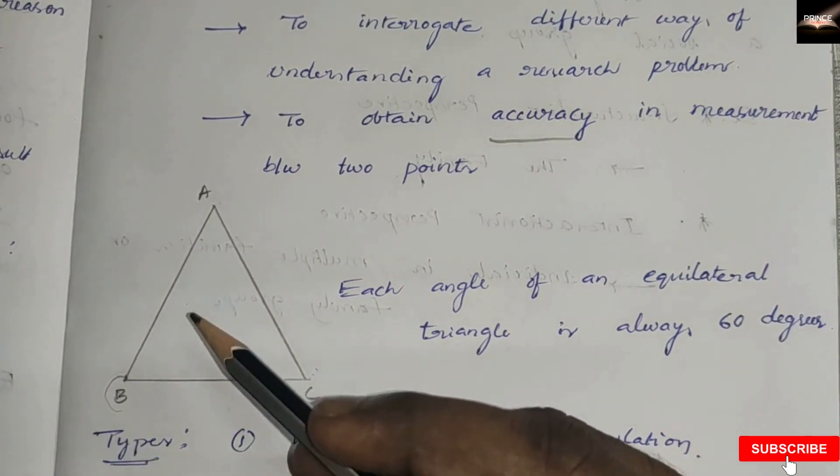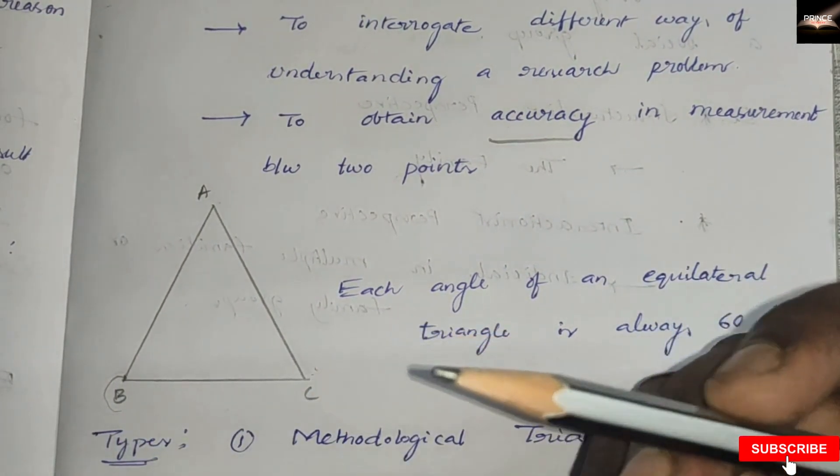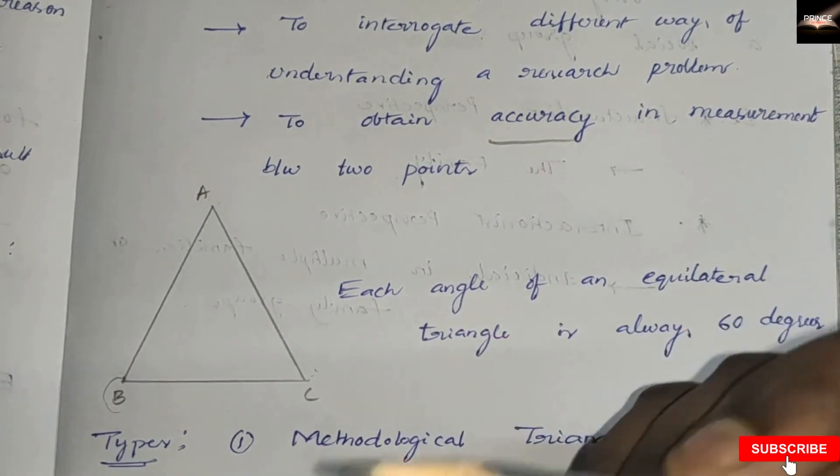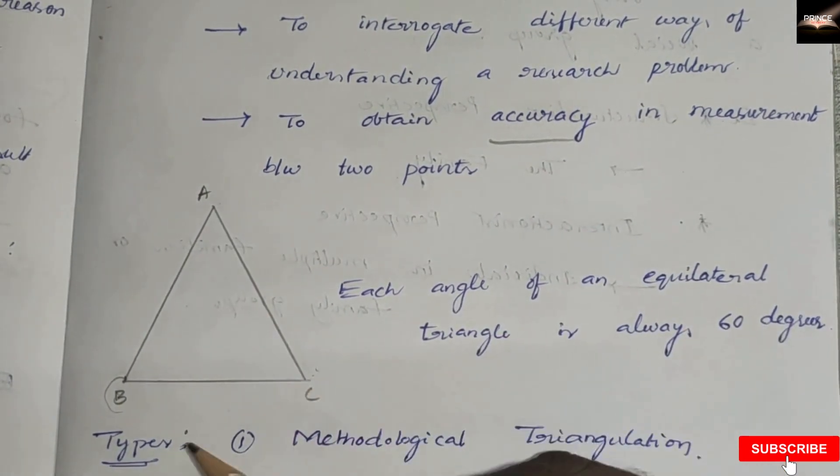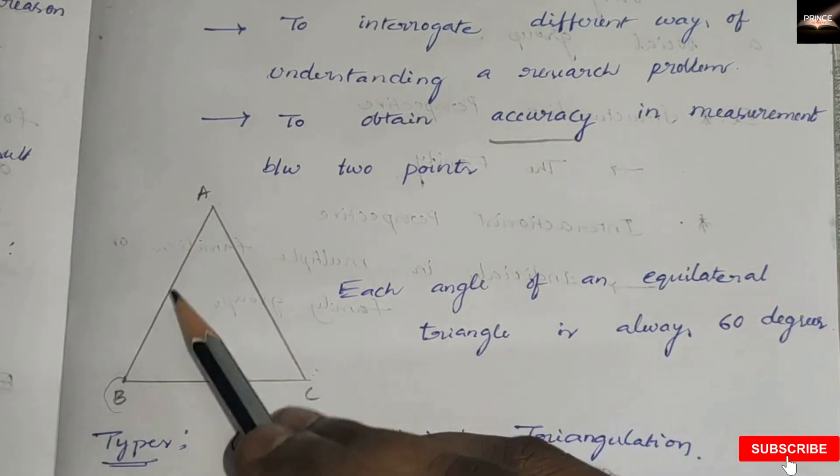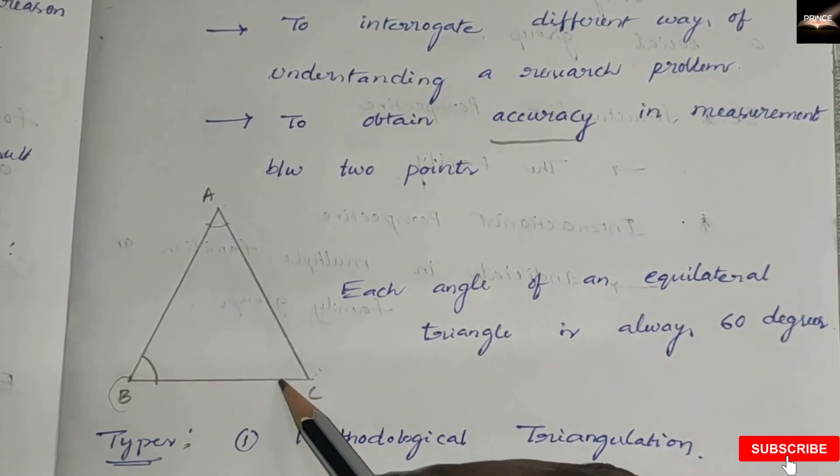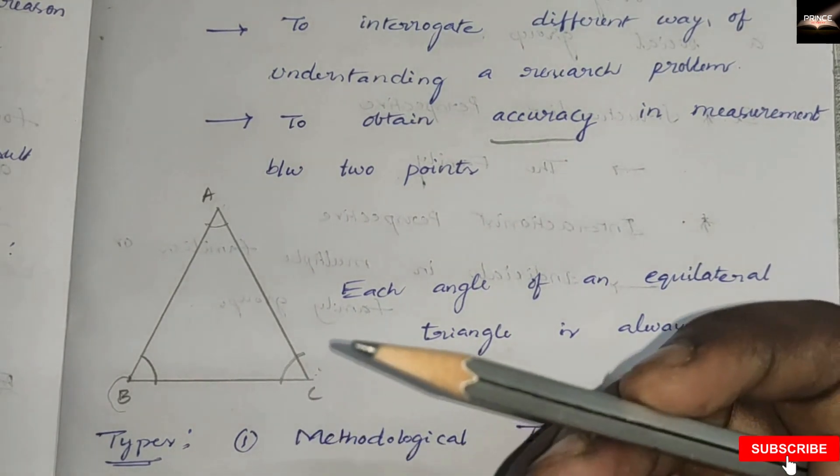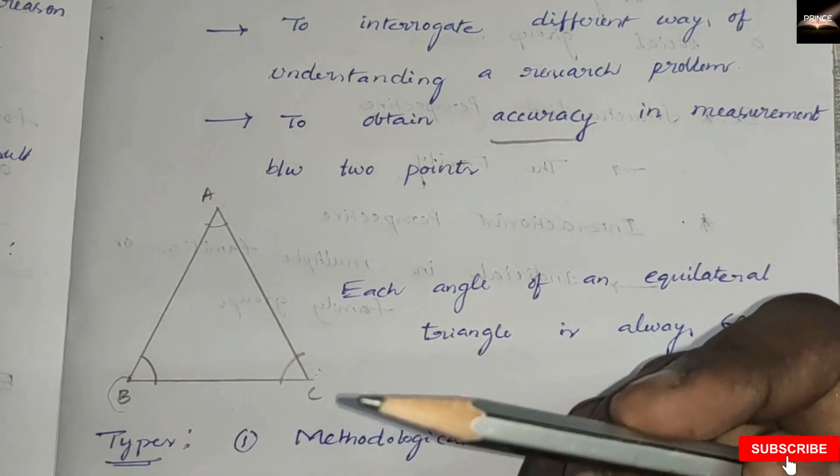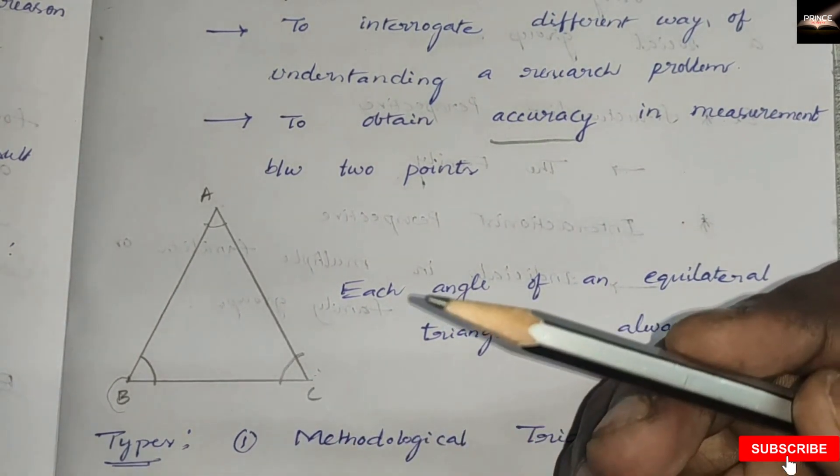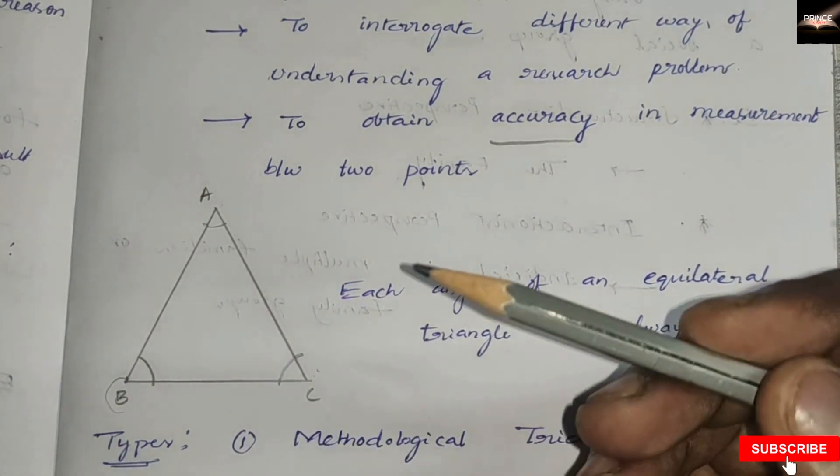This uses the mathematical principle that each angle of an equilateral triangle is always 60 degrees. So we triangulate our measurement by taking three different measurements. The theory of triangulation provides us in social research some degree of control over the accuracy of the data.